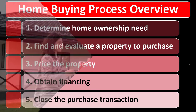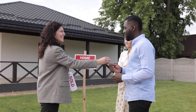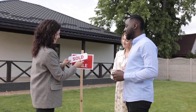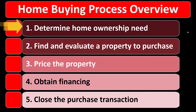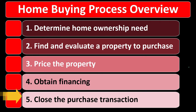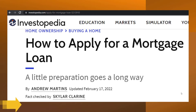Home buying clearly fits into the long-term category. We can group the home buying process into five sections: number one, determine the home ownership need; number two, find and evaluate property to purchase; number three, price the property; number four, obtain financing; number five, close the purchase transaction.